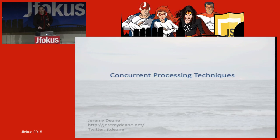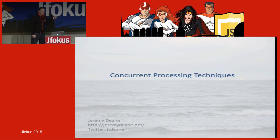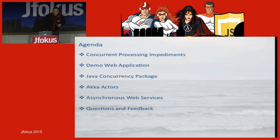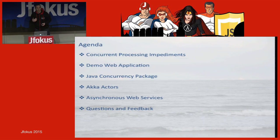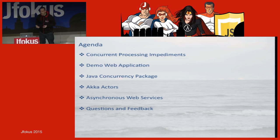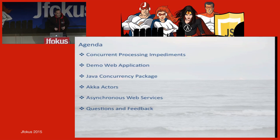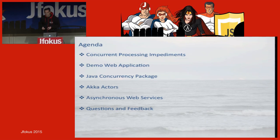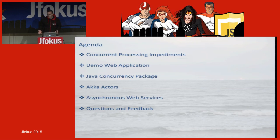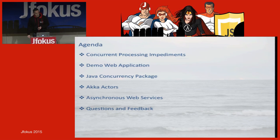All of the examples I have today are for this web application, and all the examples are available on GitHub. My Twitter account is the same as my GitHub account, so you can go clone the code and make fun of me all you want. So what will we talk about today? We'll talk about why concurrent processing is hard. We'll use a demo web application I created using Spring to walk through different concurrent techniques. We'll take a look at the Java concurrency library as well as some Akka actors, and we'll do some magic around asynchronous web services. We'll probably not have time at the end for questions, but I will stay down here as long as necessary.